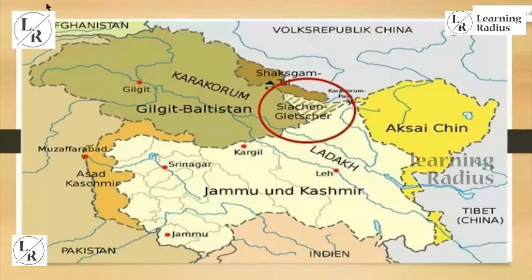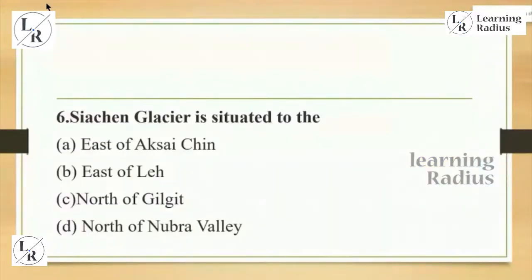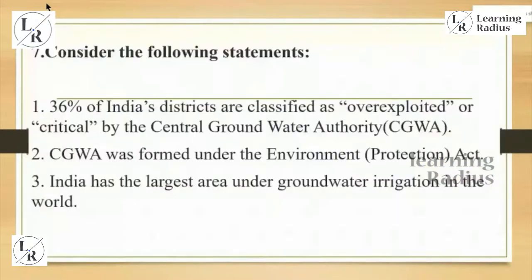This was a current affairs question because Siachen glacier and Aksai Chin were in discussion, and Pakistan-occupied Kashmir / Gilgit-Baltistan region was also in discussion. UPSC framed a question testing whether you know the locations of Aksai Chin, Siachen glacier, Lak, and Gilgit. The most significant aspect is they introduced the term 'Nubra Valley' — most people may not be familiar with it. But if you have clarity on Aksai Chin, Lak, and Gilgit — knowing Siachen is not east of Aksai Chin, not east of Lak, not north of Gilgit — you can arrive at north of Nubra Valley by elimination.